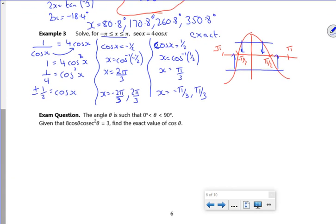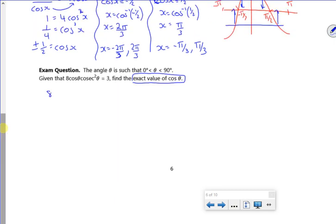The angle theta is such that 0° < θ < 90°. Find the exact value of cos θ. I'm not going to solve it, I want to get something with cos in it. So I've got 8 cos theta times by 1 over sine squared theta is 3. So my 8 cos theta, I take up the sine squared. You remember from last year, anything like this when you've got the wrong trig function squared, you just change it.